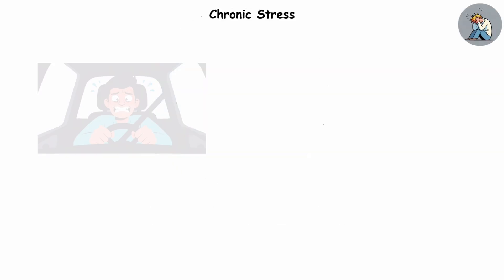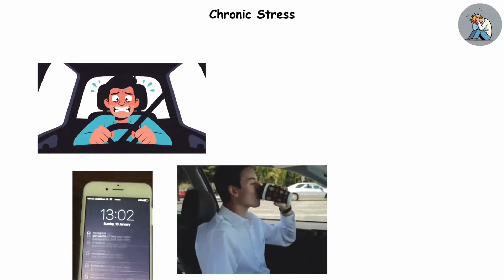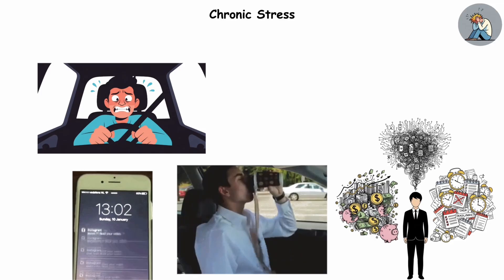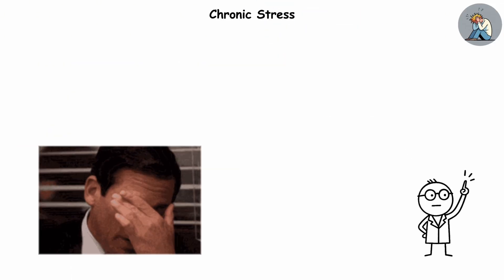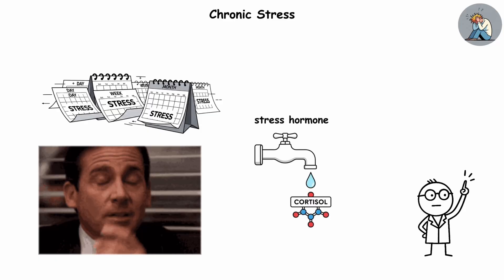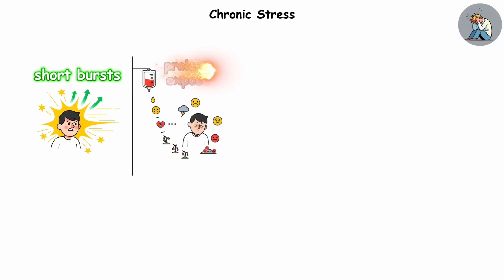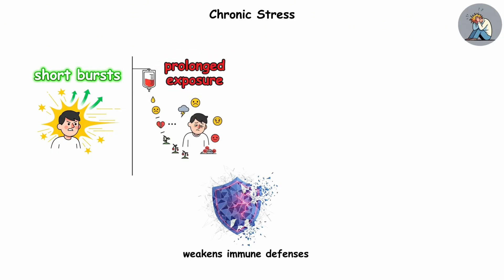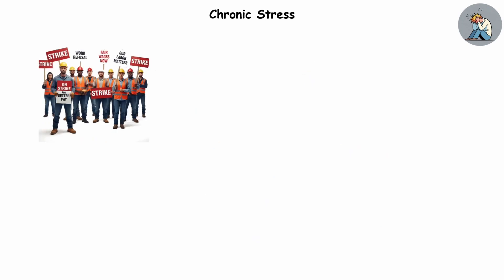Chronic stress. You're stuck in traffic, your phone's blowing up with work emails, and your coffee just spilled in your lap. Your body? It's basically hitting the panic button on repeat. Here's the deal. When stress lingers, days, weeks, even months, your body pumps out cortisol, the stress hormone, like it's on an endless coffee drip. Cortisol is helpful in short bursts, but when it sticks around, it weakens your immune defenses, stirs up inflammation, and even messes with your DNA repair crew. Think of it like your cell's maintenance team going on strike.